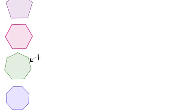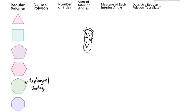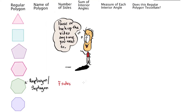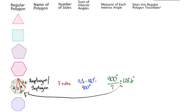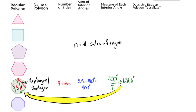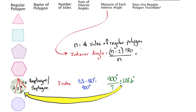As an example, I will do the heptagon, also known as the septagon, which is a seven-sided polygon. We know that we can make up five triangles inside a heptagon. So five triangles times 180 degrees gives us 900 degrees as the sum of the interior angles of the heptagon. If we divide this by seven, we get approximately 128.6 degrees for one interior angle. We can also use the formula (n minus 2) times 180 divided by n to give us the interior angle of each regular polygon.